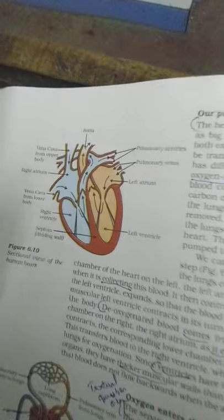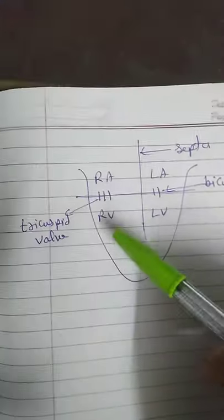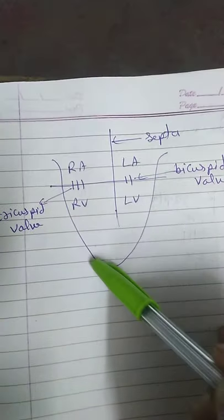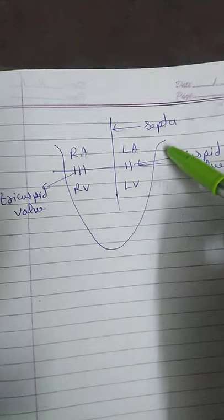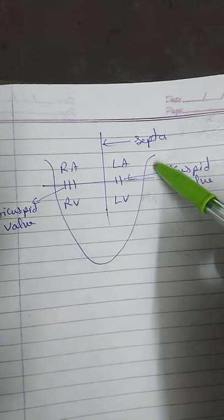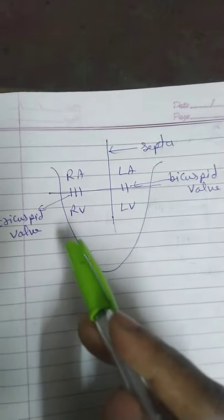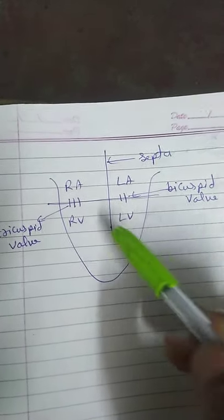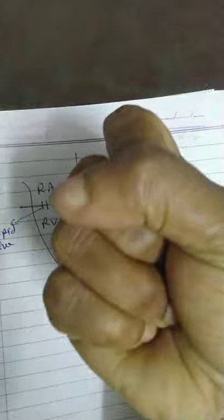We have to draw this diagram, but for explanation purposes I have drawn an easier one so that you can understand it. First of all, what is the shape of the human heart? It is conical in shape. The human heart is conical and it is located between the two lungs, slightly on the left-hand side. The size of the human heart is about the size of our fist.